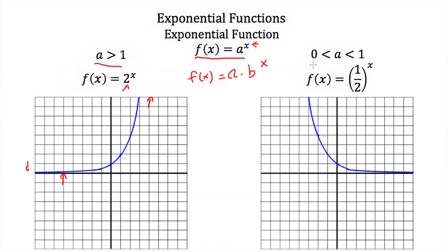If your base or a value is between 0 and 1 — so it's a fraction — then your exponential graph will be flipped. It starts very high towards positive infinity and as you move in the positive x direction, you approach 0. Again, the x-axis is an asymptote. The graph will never actually hit 0, but as x gets very large, we get a smaller and smaller fraction, getting closer and closer to 0.